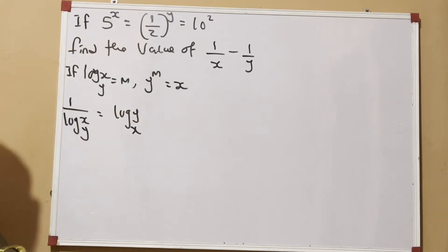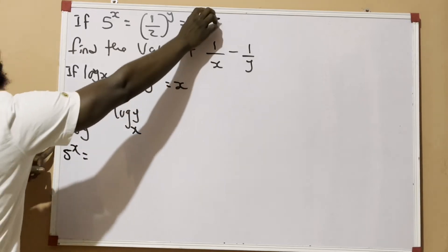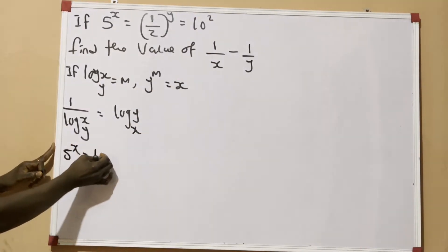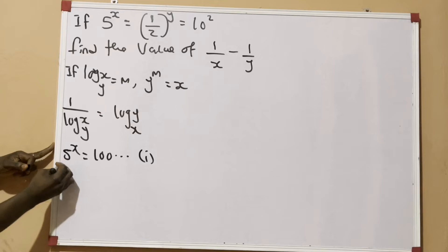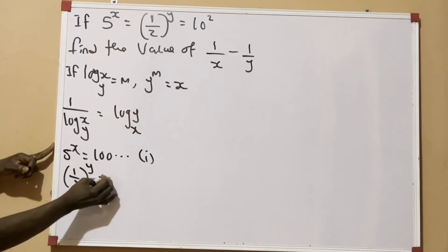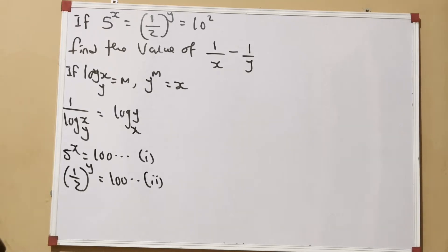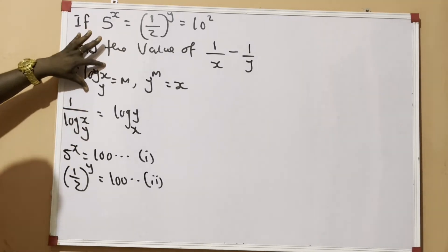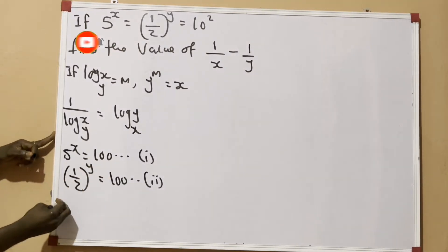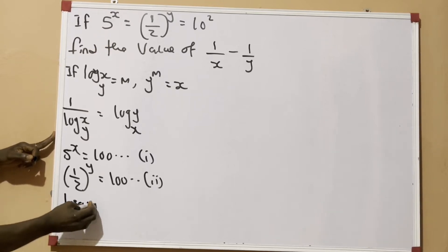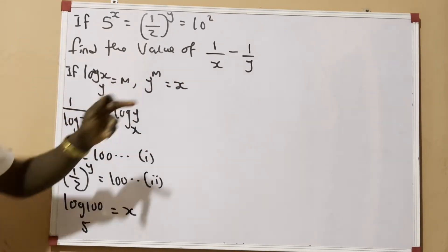For the question, we have 5 raised to the power of x equal to 10 raised to the power of 2. We know that 10 raised to the power of 2 is 100, so we call this equation 1. Following the first rule, 5 raised to the power of x equals 100 in log form is: log 100 base 5 is equal to x.